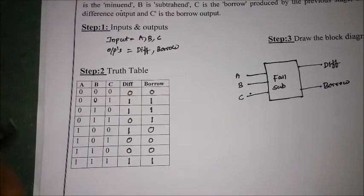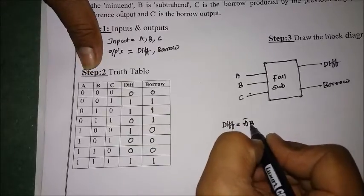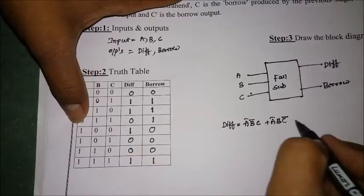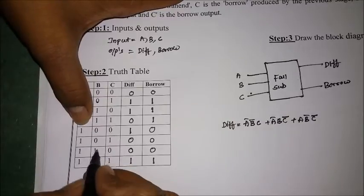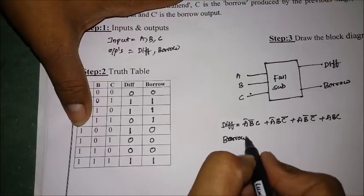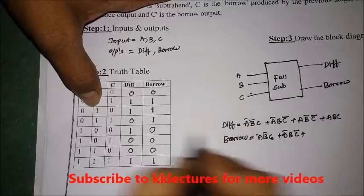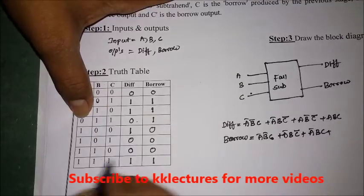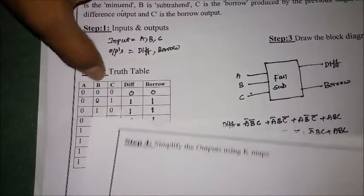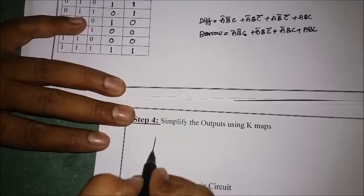Now simplifying the given expressions. The difference has four minterms: Ā·B̄·C, Ā·B·C̄, A·B̄·C̄, and A·B·C. The borrow has four minterms: Ā·B̄·C, Ā·B·C̄, Ā·B·C, and A·B·C. I will simplify these using a three-variable K-map.